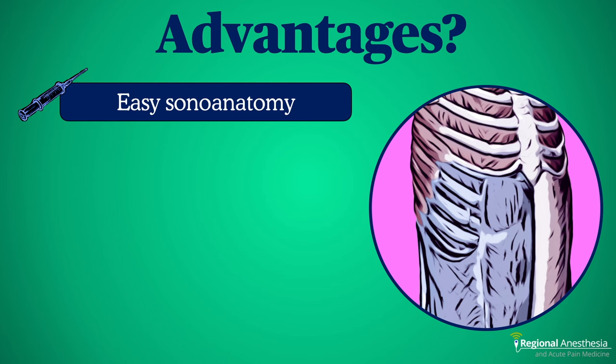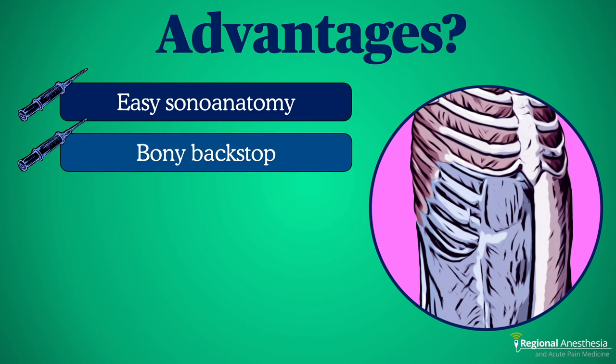It's also nice that the patient is supine. We'll often do this at the end of the case, and unlike an ESP, paravertebral, or anterior QL block, we don't have to get the patient up on their side. Similarly, there's a bony backstop. Unlike the TAP block, where it can be frustratingly challenging to open up that intermuscular fascia plane, this plane peels up off the ribs easily. I'll typically land my needle on the seventh rib, and my test injection with saline lifts the muscle off on the first try, more often than not.